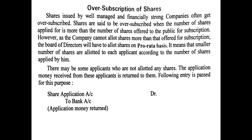If you remember, in the previous video we discussed under-subscription of shares, where the number of subscribed shares is less than that of issued shares. But in case of over-subscription, the number of subscribed shares exceeds the number of issued shares. For example, if a company issues 5,000 shares but receives application money for 6,000 shares, that is a case of over-subscription. Shares are said to be oversubscribed when the number of shares applied for is more than the number of shares offered to the public.